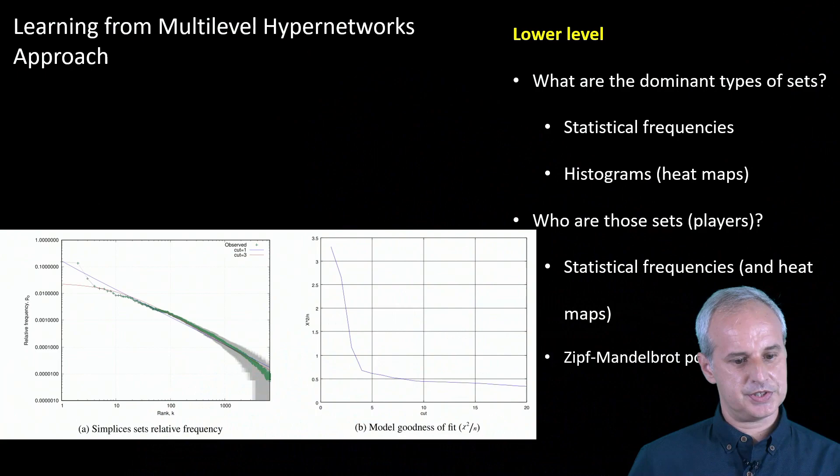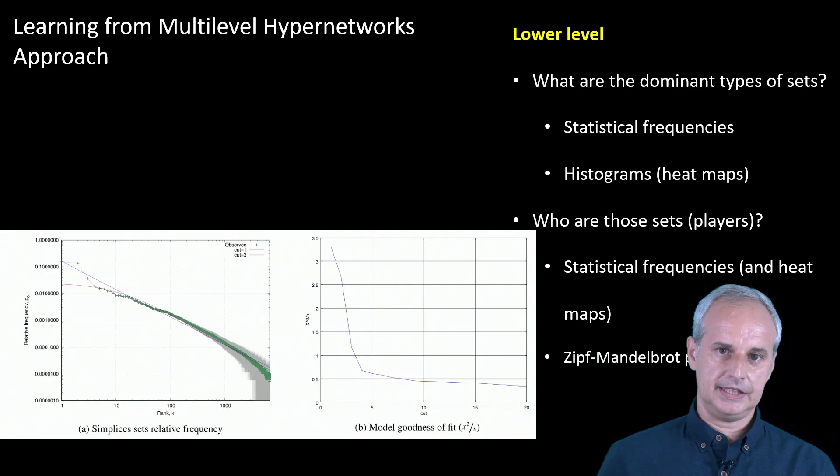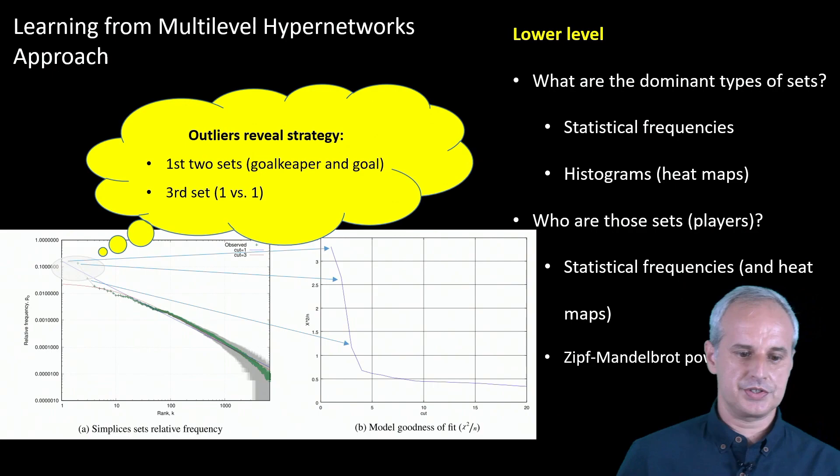We have identified the power law specific Ziv Mandelbrot and we have seen that the first, second, third and sometimes the fourth and the fifth sets were out of the bounds of this model and we tried to understand why they were outliers.